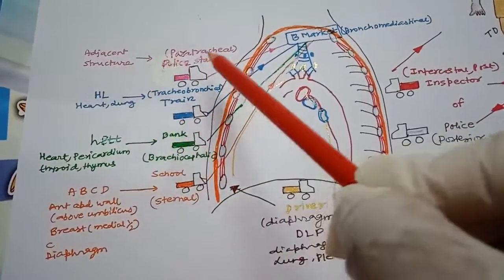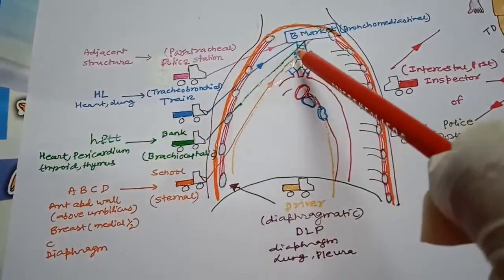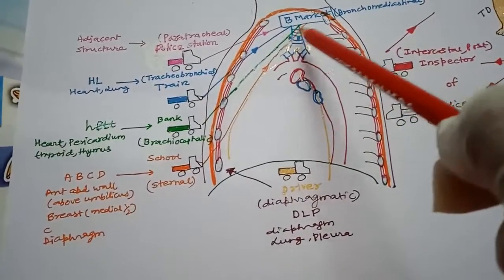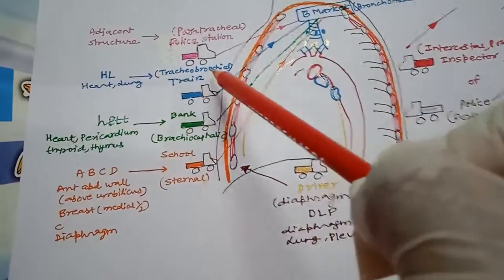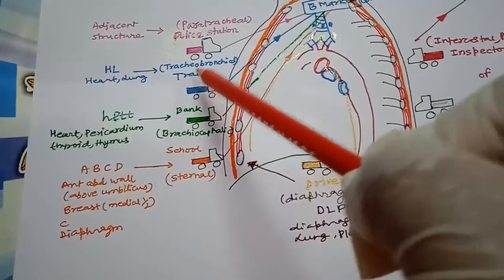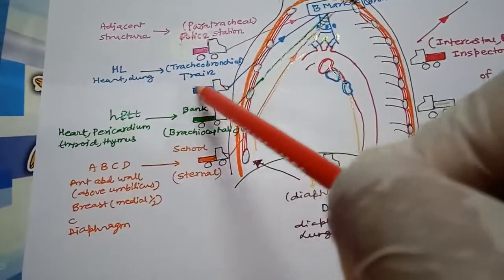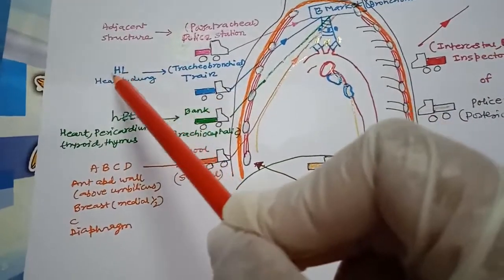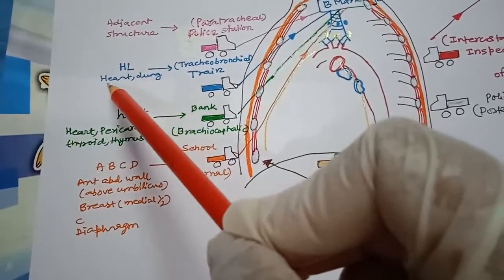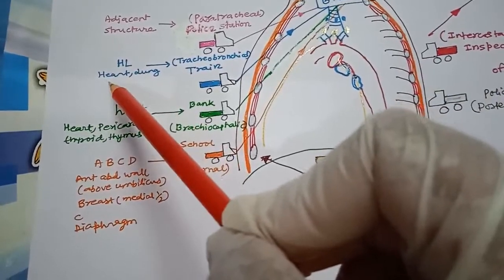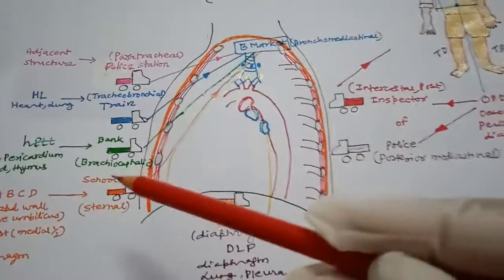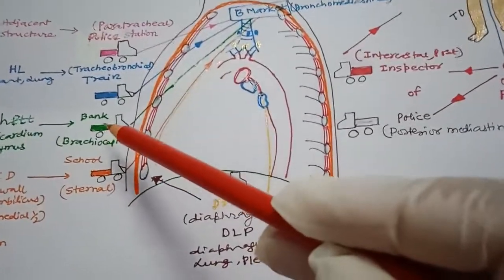The paratracheal lymph node collects lymph from adjacent structures. The tracheobronchial lymph node — represented by the train — collects from the heart and lung, remembered by the mnemonic 'hell' standing for Heart and Lung.